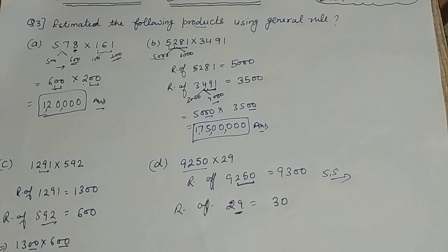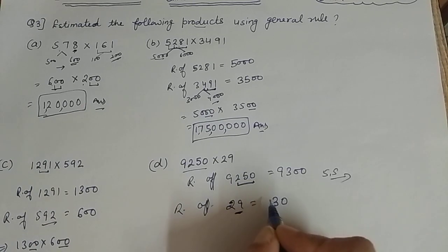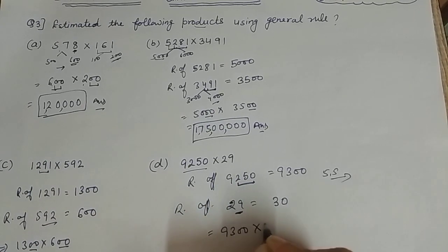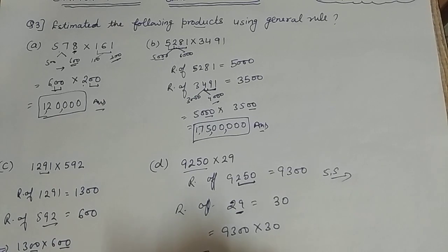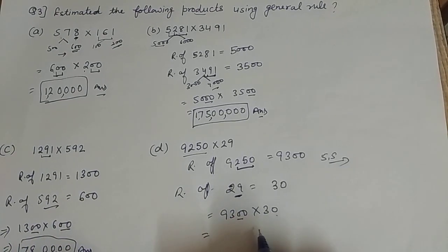Now we can multiply 9,300 and 30. Count how many zeros - there are 3. Three 3s are 9, and 3 times 9 is 27. So 2,79,000. This was our answer for part D.